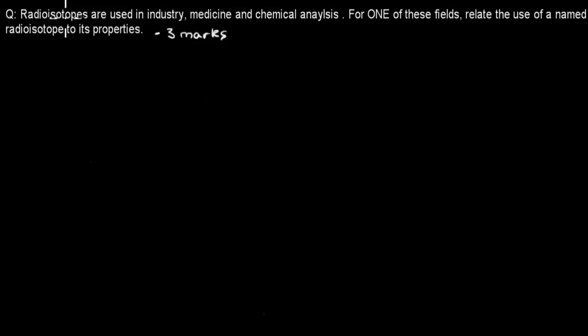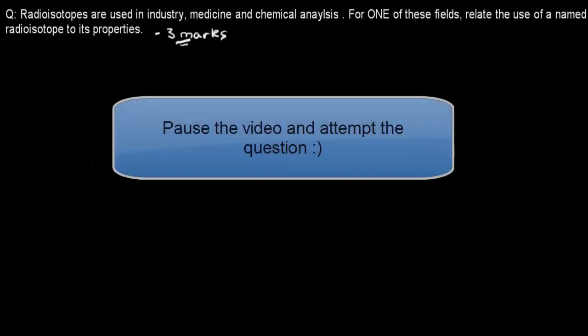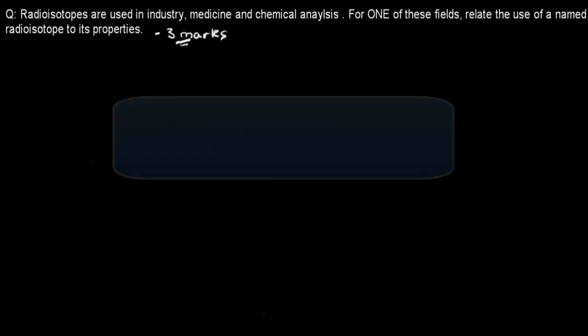The question says radioisotopes are used in industry, medicine, and chemical analysis. For one of these fields, relate the use of a named radioisotope to its properties. That's worth three marks. I'll give you five seconds to pause the video and then attempt the question.